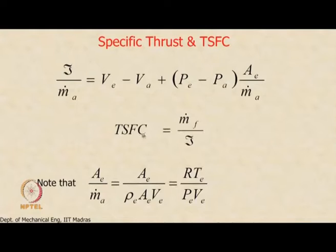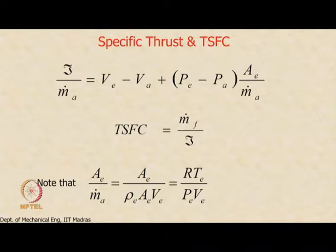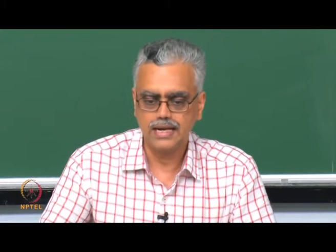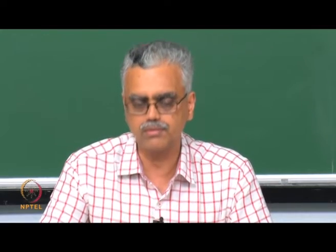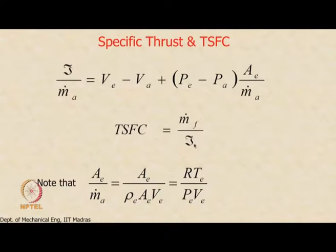Thrust specific fuel consumption (TSFC) is the mass flow rate of fuel through the engine divided by the thrust it produces. The fuel mass flow rate can be calculated based on the desired increase in stagnation temperature — specifically, the required turbine entry temperature. Both absolute fuel flow rate and TSFC are important performance metrics.